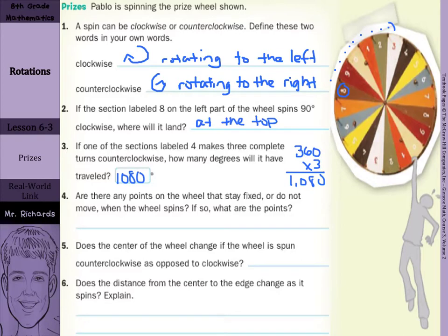Are there any points in the wheel that stay fixed or do not move when the wheel spins? If so, what are the points? Well, I would say this point right here, in the middle, doesn't move. So I'm going to say yes at the center. It does not move. It is fixed.